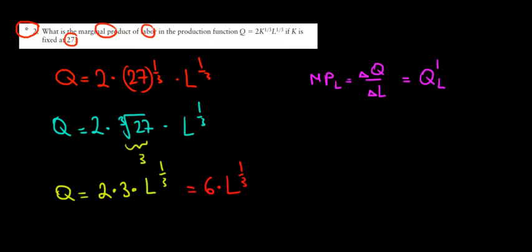Okay, so let's do that. Our function is equal to 6 times l to the power of 1 over 3. We want to differentiate this with respect to labor. So labor is our variable.